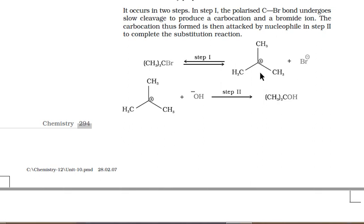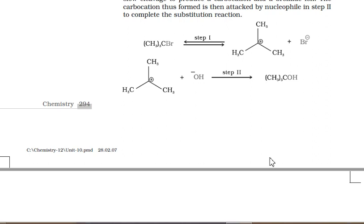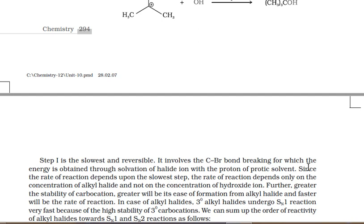In the second step, the nucleophile attacks the carbocation. Since the carbocation has trigonal planar geometry, the nucleophile can attack from the front side (same side where the leaving group departed) or from the back side. Front-side attack gives retention of configuration; back-side attack gives inversion of configuration. Since both possibilities are equal, there is 50% retention and 50% inversion — so if the reactant is dextrorotatory, 50% of the product is dextrorotatory and 50% is levorotatory.